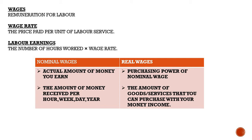There are two types of wages: a nominal wage and a real wage. Your nominal wage is the actual amount of money that you earn — the amount of money you earn per day, per week, or per month. Your real wage is what you can purchase with your nominal wage; it refers to the purchasing power of your nominal wage, and it depends on your nominal wage as well as the prices of goods and services that you purchase.